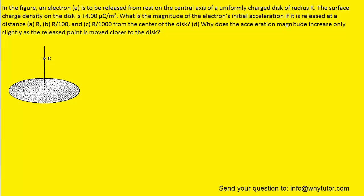In the picture we have a charged disk with an electron placed above the center of that charged disk. In this chapter there is derived an expression for the electric field that is produced by a charged disk, so let's take a look at that equation.